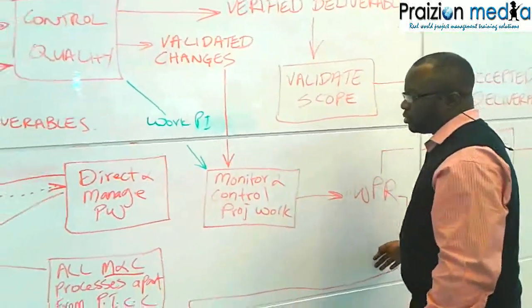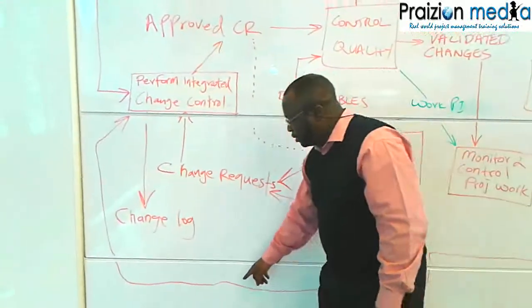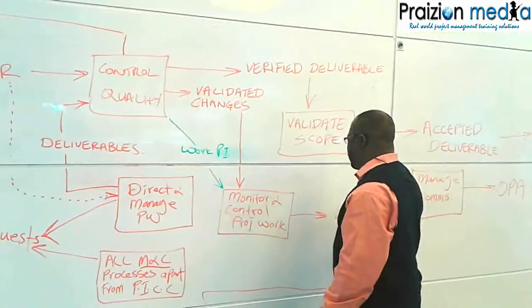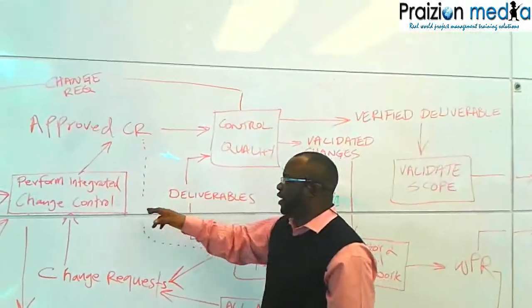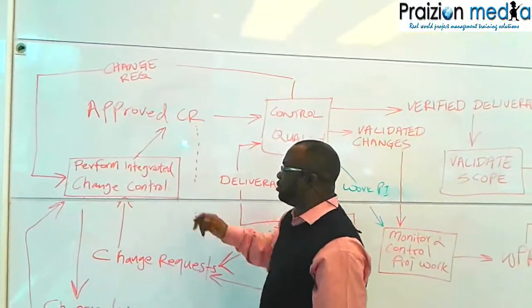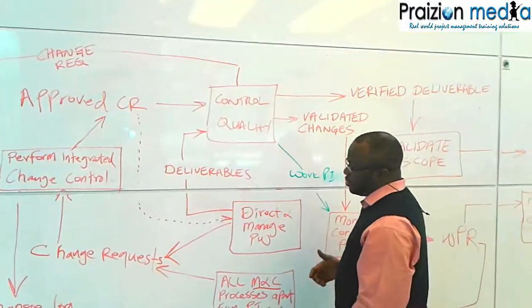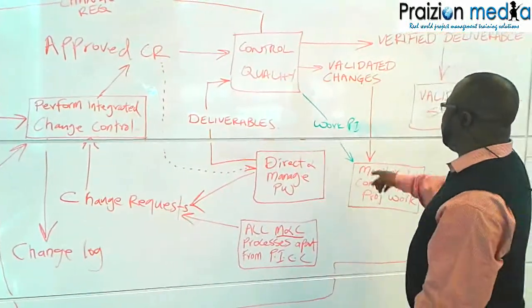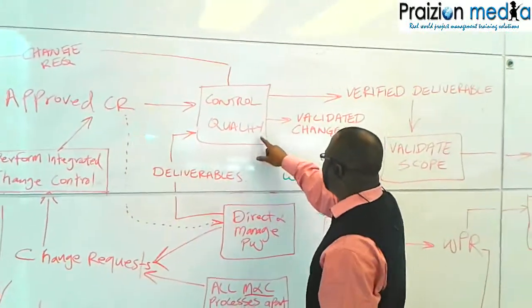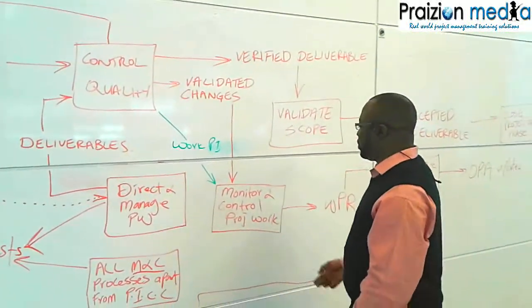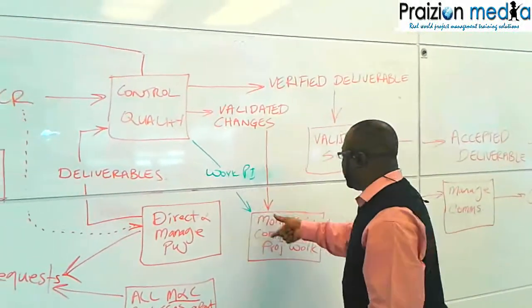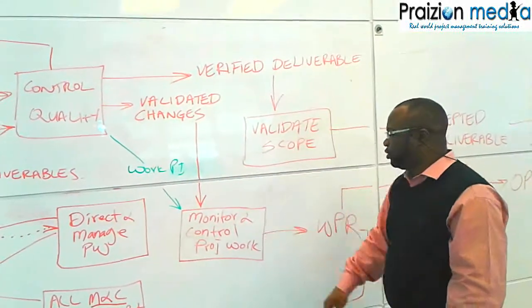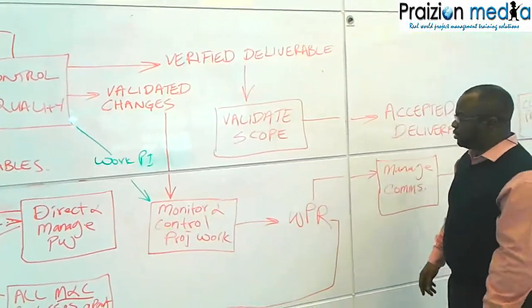The work performance report goes all the way back into Perform Integrated Change Control, because work performance reports are used to assess if a change request should be approved or rejected based on current performance. Your change requests go in there and you get a change log as an output. Work performance information could also come from Control Quality and goes into Monitor and Control Project Work, since that is also an ingredient for compiling work performance reports. So you've got validated changes and WPI going into Monitor and Control Project Work to give you the WPR.